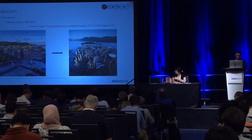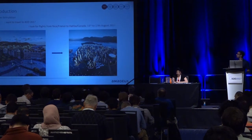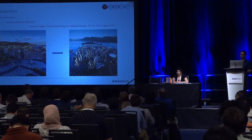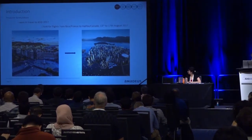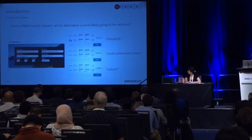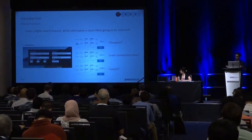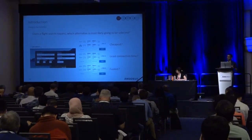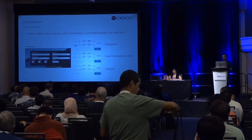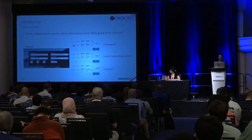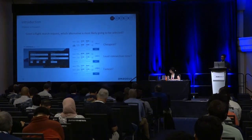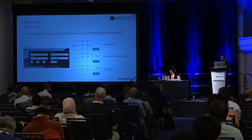The problem we're trying to solve: let's say I want to travel to KDD. I live in France, in Nice, so I look for a flight from Nice, France to Halifax for given dates. I'll be presented with different alternatives and I will choose one — I will buy it. In the case of Amadeus, the problem we're trying to solve is: given a flight search request, which of the alternatives is most likely going to be selected or bought? Maybe it will be the cheapest one, the one with the least connection time, the fastest, and so on.